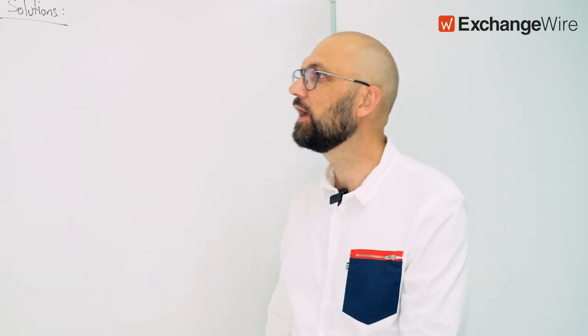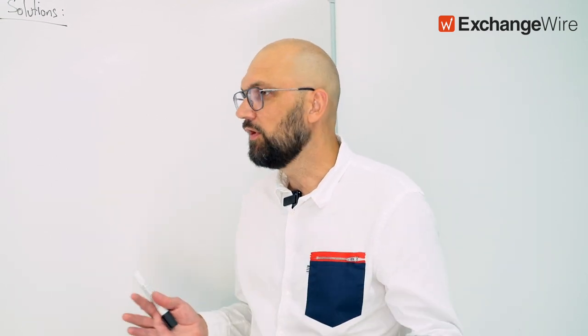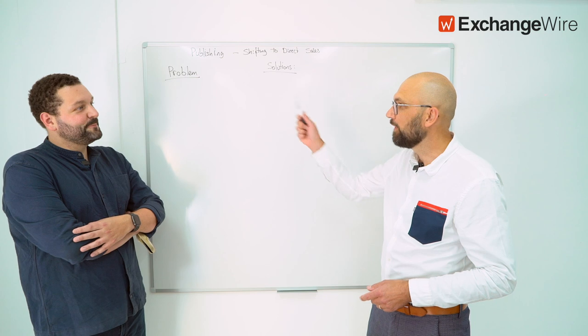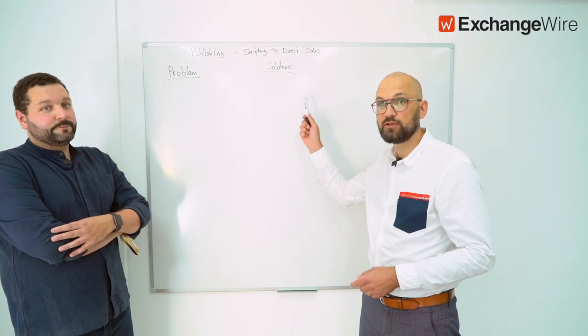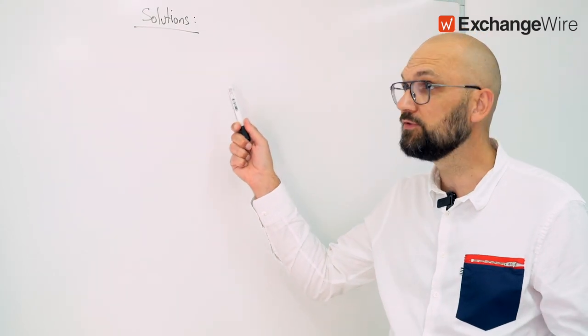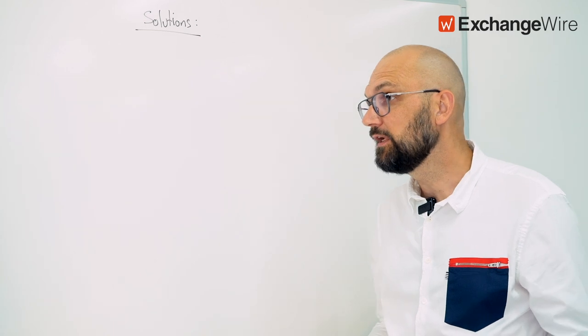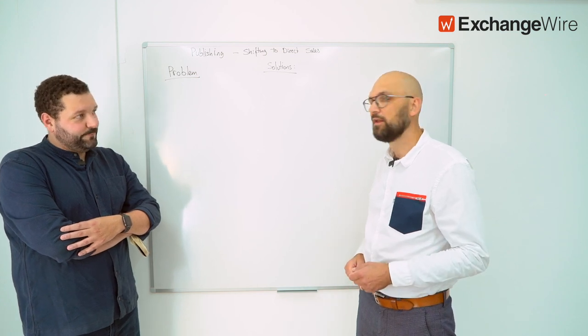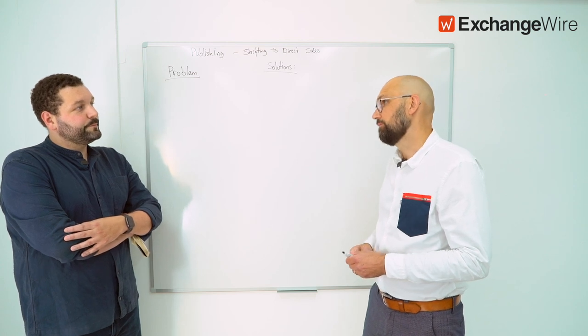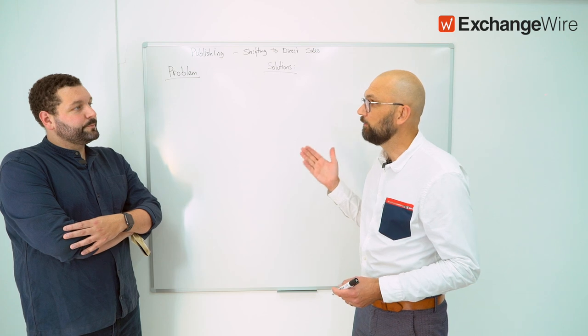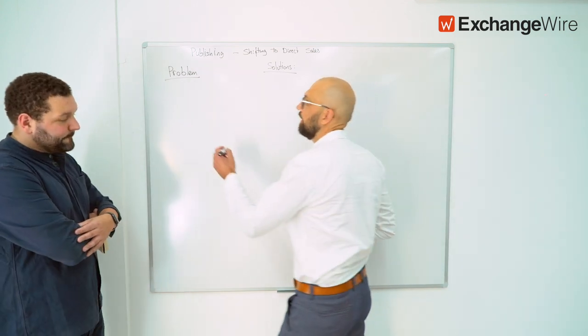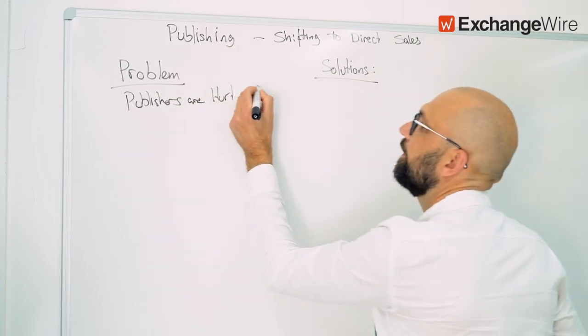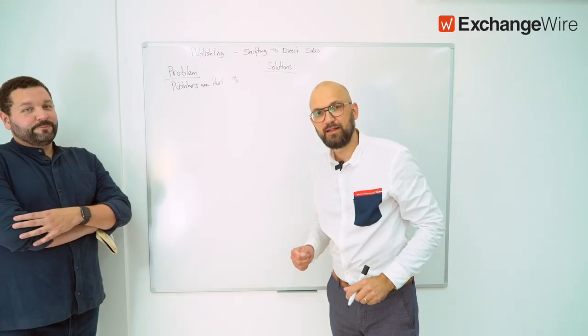I think it's worth a few minutes to look at the whole shift that is going on in the industry right now, where publishers are shifting to direct sales. I cheated a little bit on the board and started writing that we'll be talking about a problem first of all. This is all initiated by ITP and GDPR, ePrivacy, all the legislation. So it's a privacy topic. The problem publishers are facing right now is that they are hurt economically.